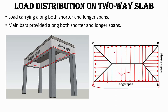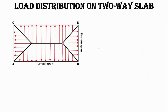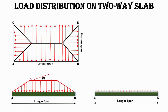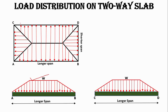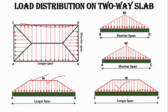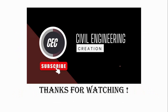On beam CD the load is also trapezoidal, while on the shorter span beams AC and BD the load will be triangular. If we draw the load pattern on the longer span beam, it shows trapezoidal loading, and on the shorter span beams AC and BD, triangular loading. Links to videos on calculating trapezoidal and triangular loads are in the description.